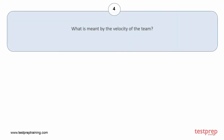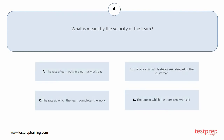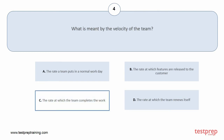Question number 4: What is meant by the velocity of the team? Your options are: A, the rate a team puts in a normal work day; B, the rate at which features are released to the customer; C, the rate at which the team completes the work; D, the rate at which the team renews itself. The correct answer is option C.